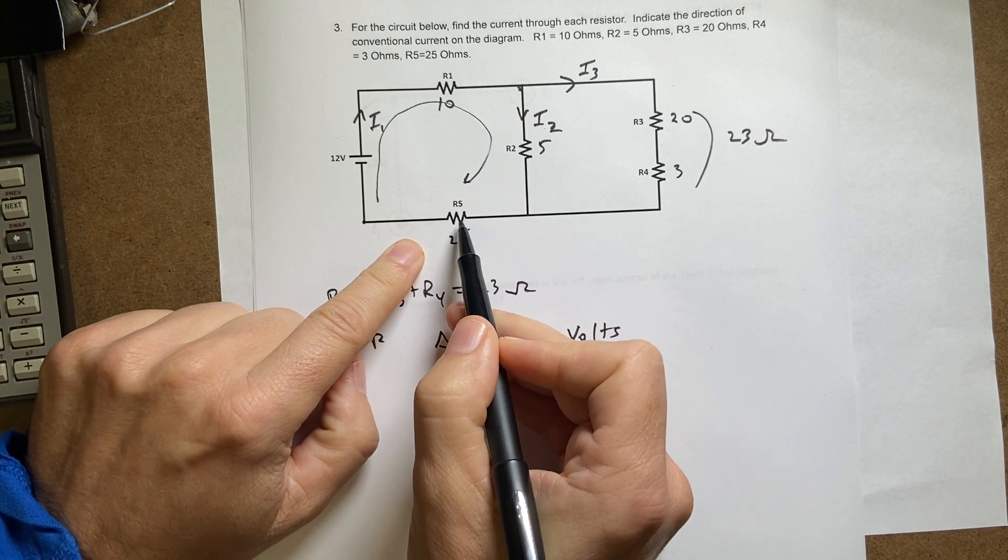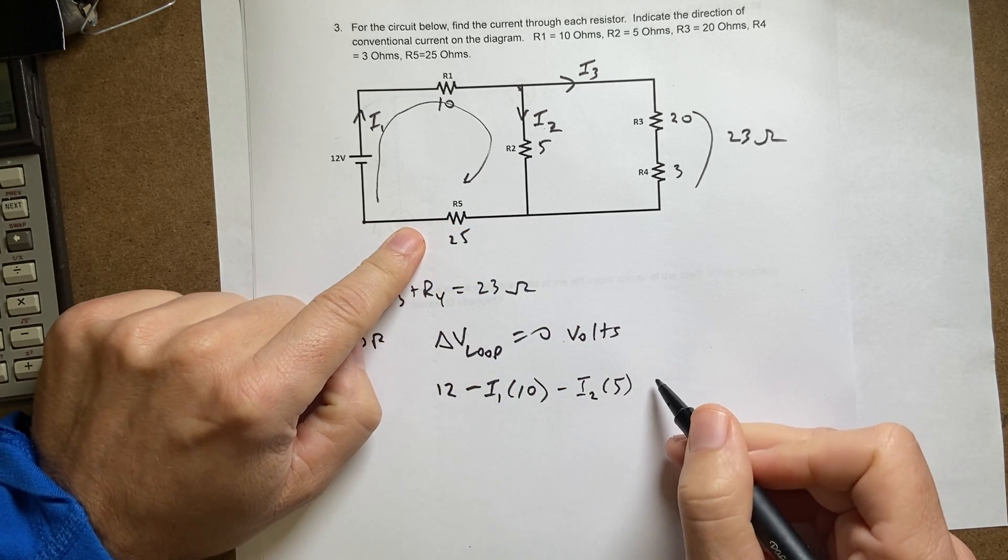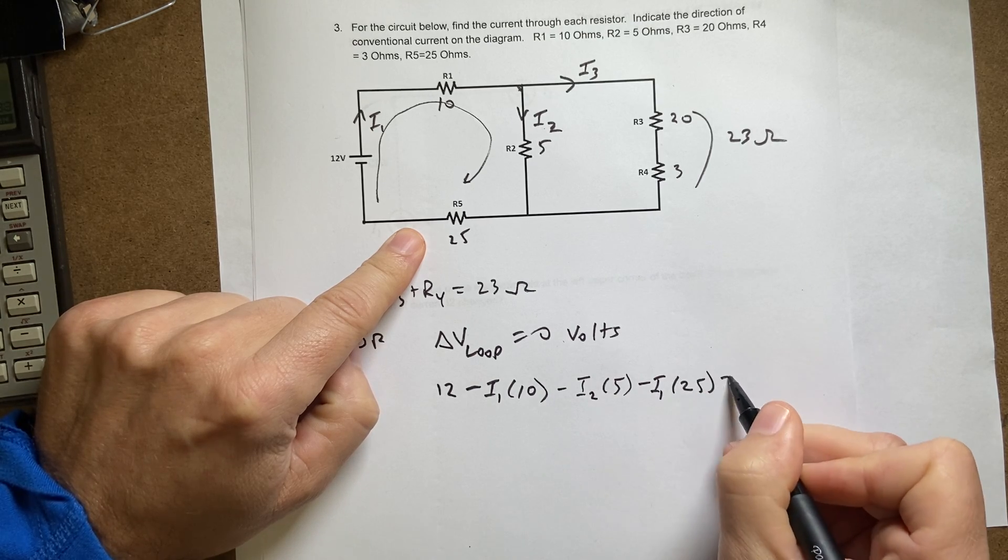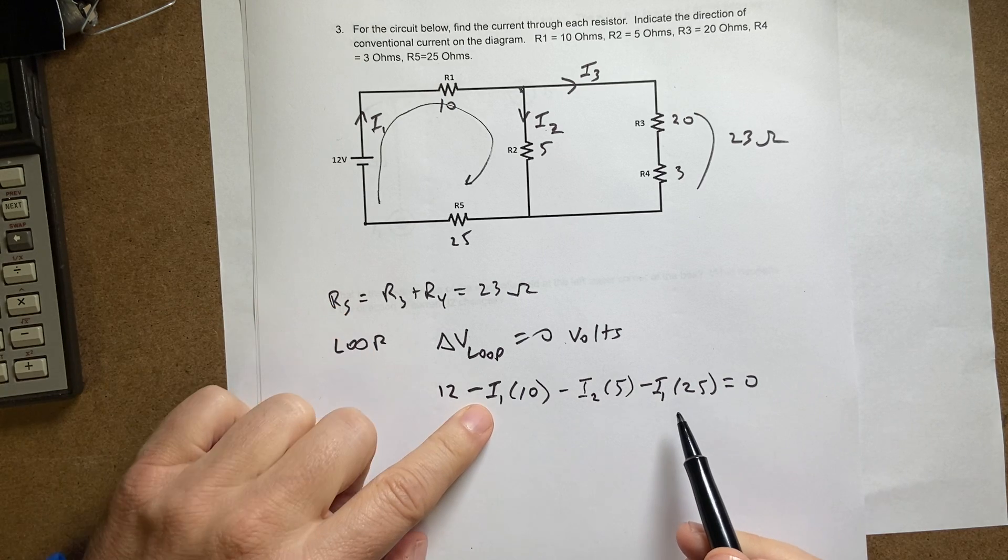So I'm going to go in the same direction as the current, so I get minus i1 times 25, and that gets back to here. I have zero. Now I'm going to go ahead and combine these two terms. I have minus 10 i1 and minus 25 i1.